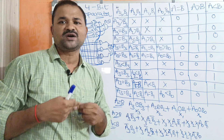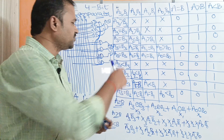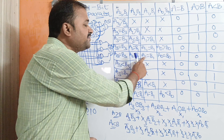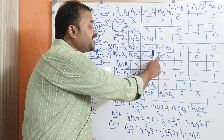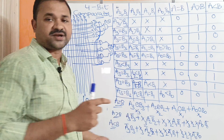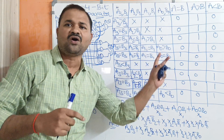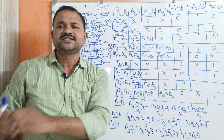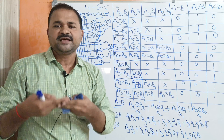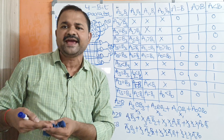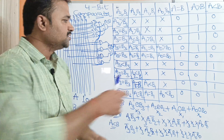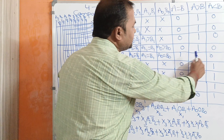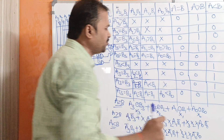Now let us focus on the equal to case. If A3 equals B3, A2 equals B2, A1 equals B1, and A0 equals B0 — that is, if all the bits of the first number are equal to the second number — then we can say A equals B. So the A equal to B output is high and the remaining two outputs are 0.